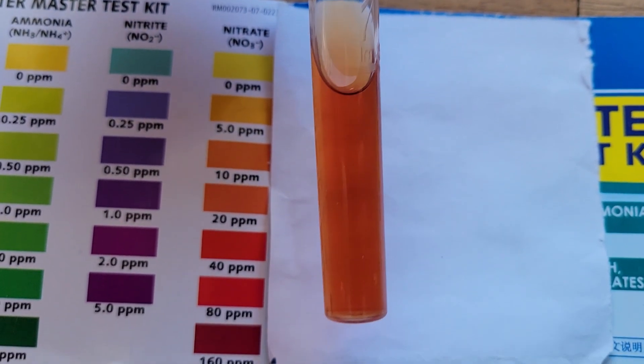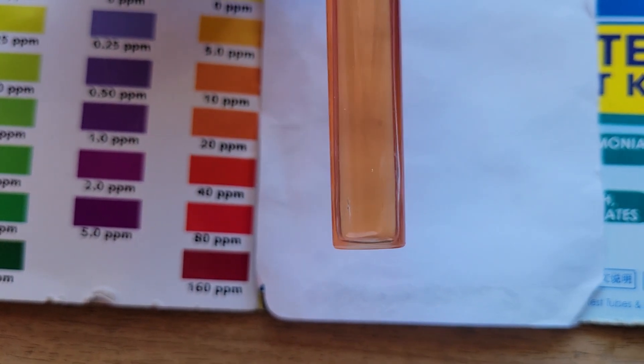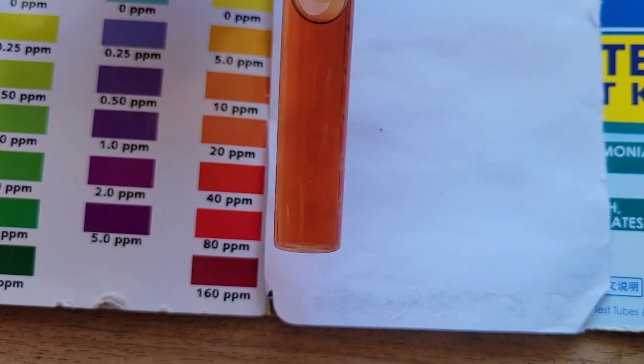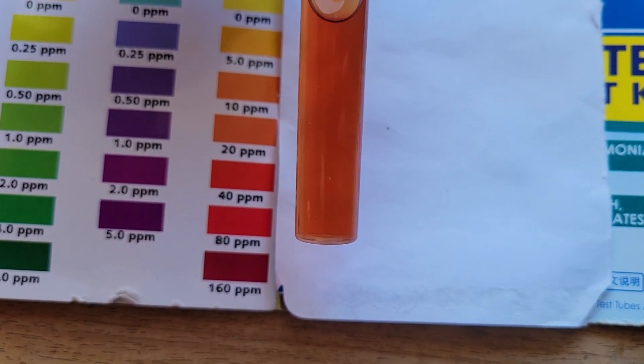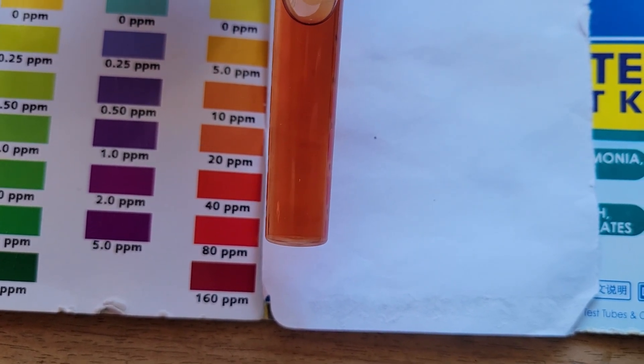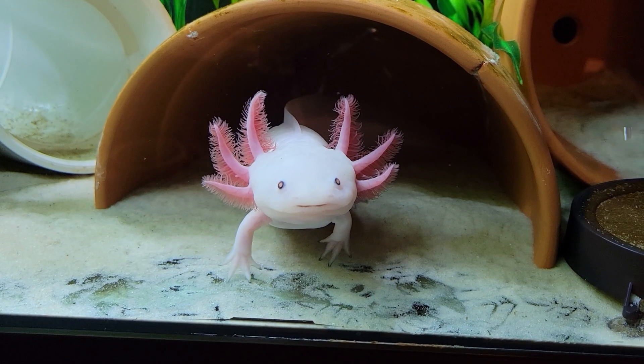So for this test, you want your results to be 20 or under. I always check these results out in the sunlight. Sometimes it can be very difficult to tell the difference between the 10 and the 20. I'd say this one is reading about 20, which means tomorrow I will be doing a water change, which is going to pull some of those nitrates out of the water.